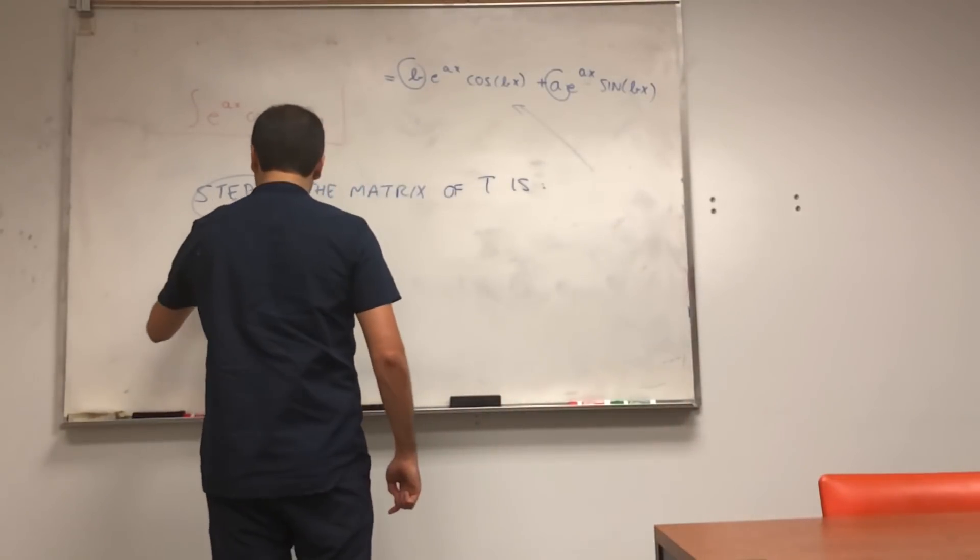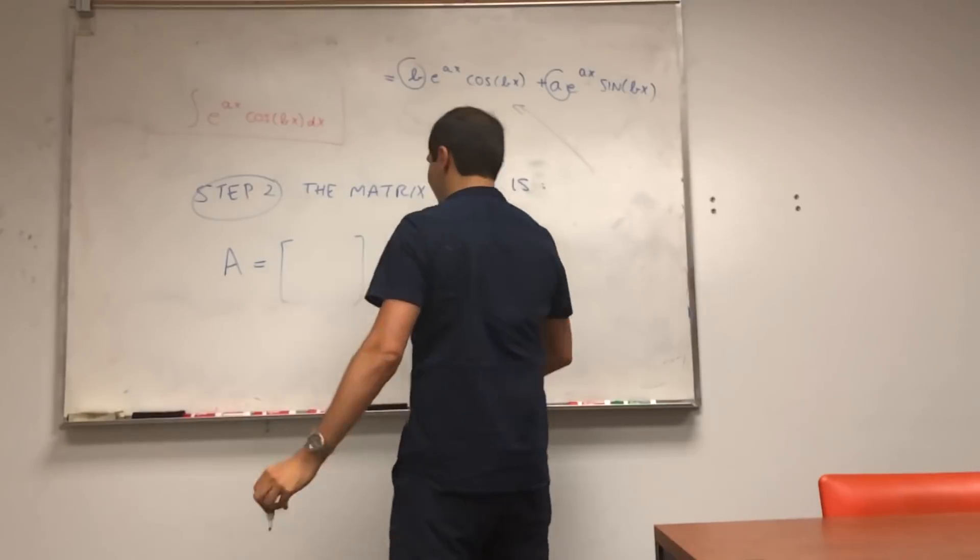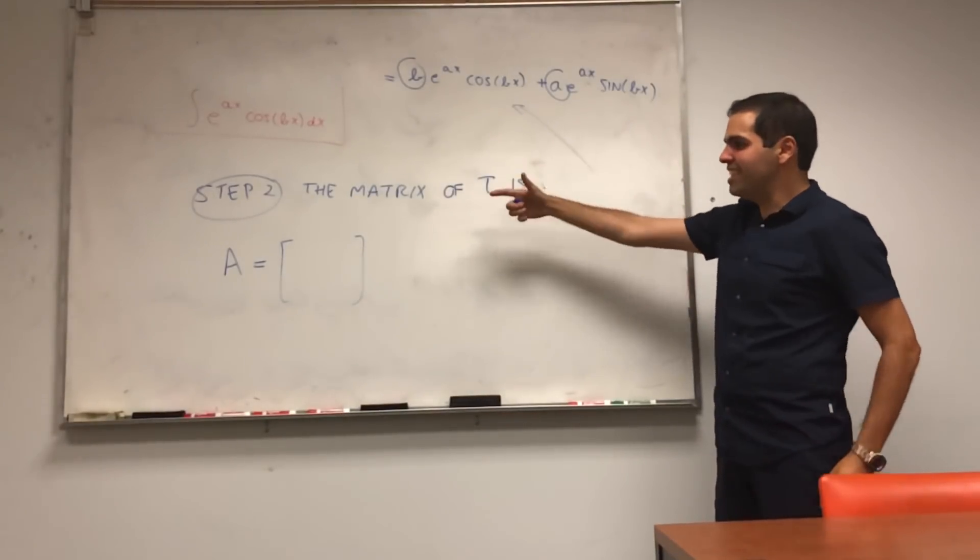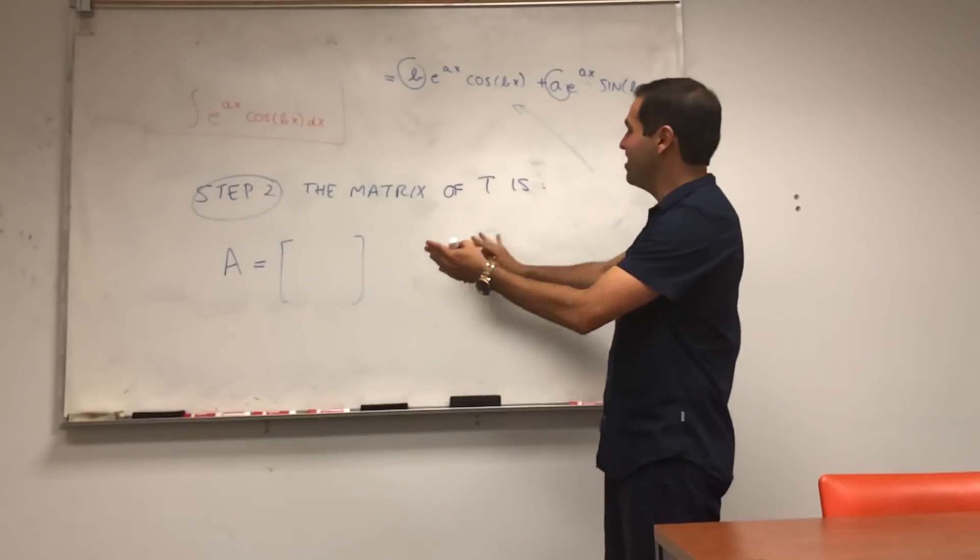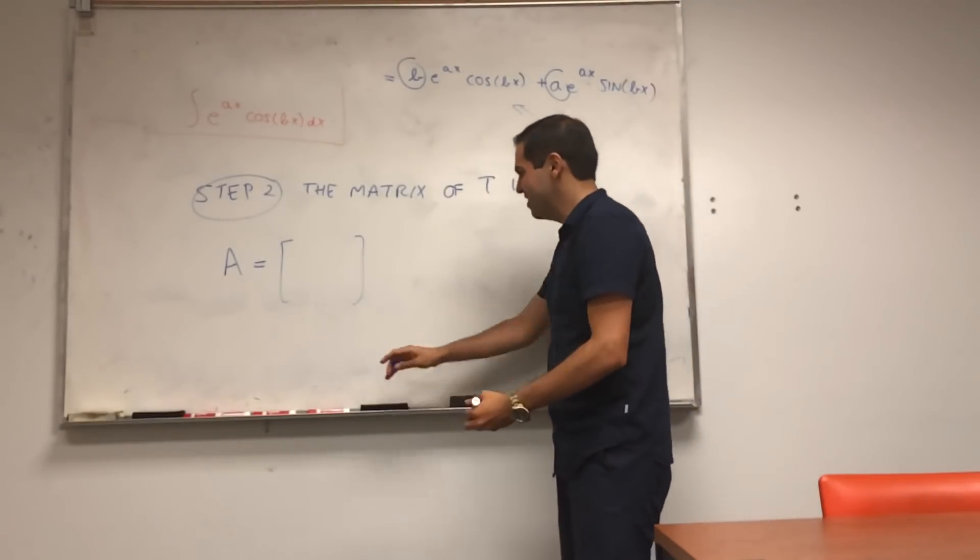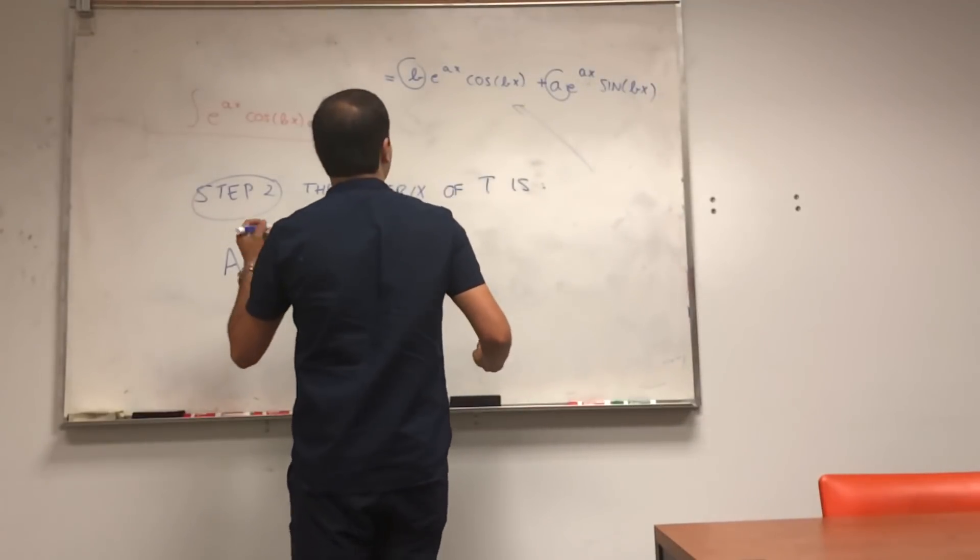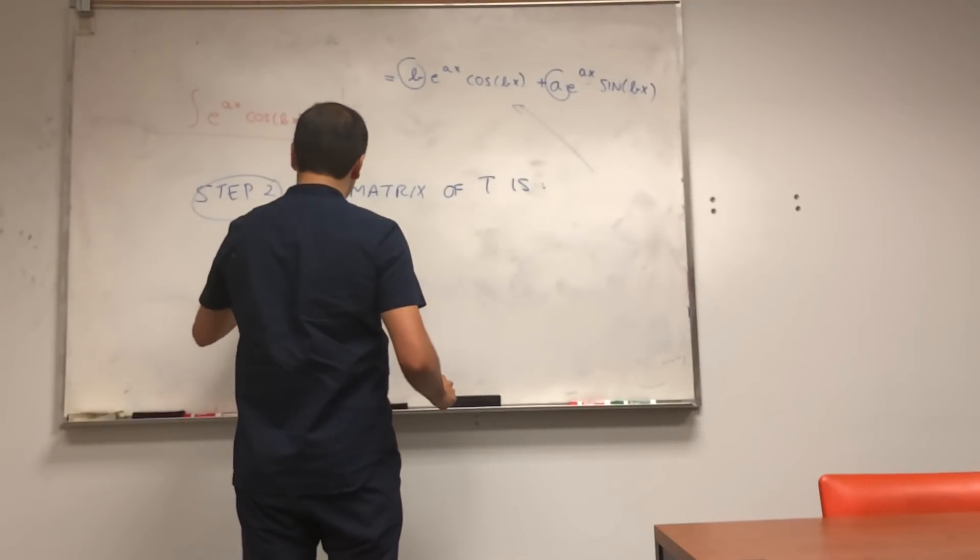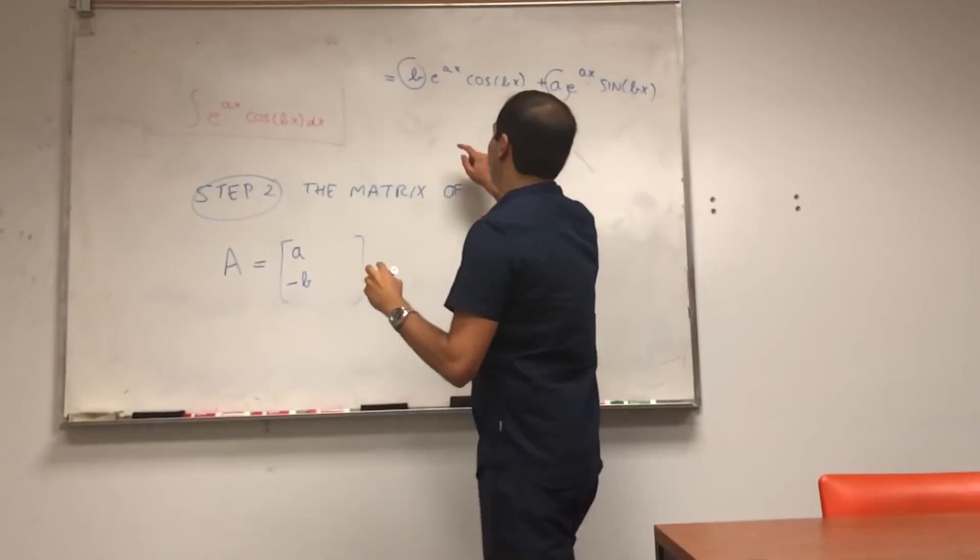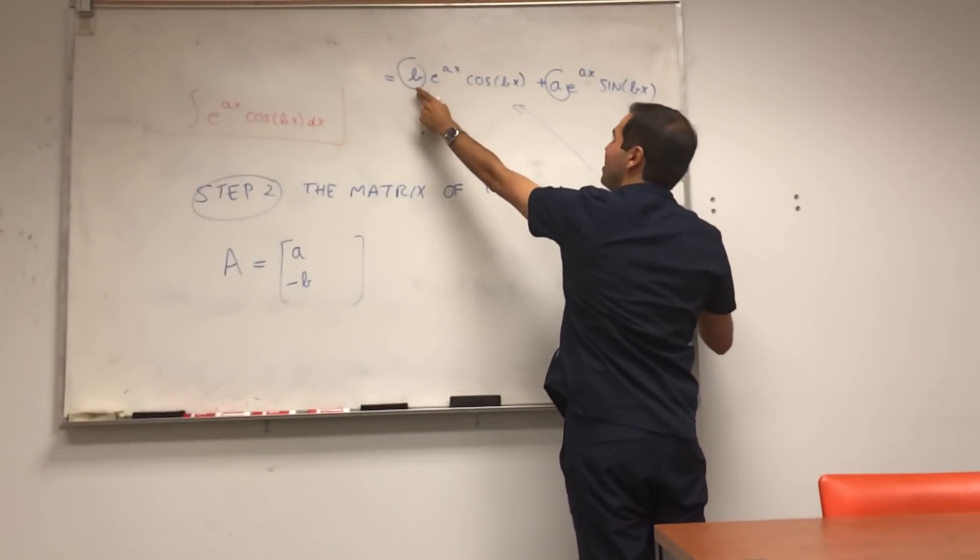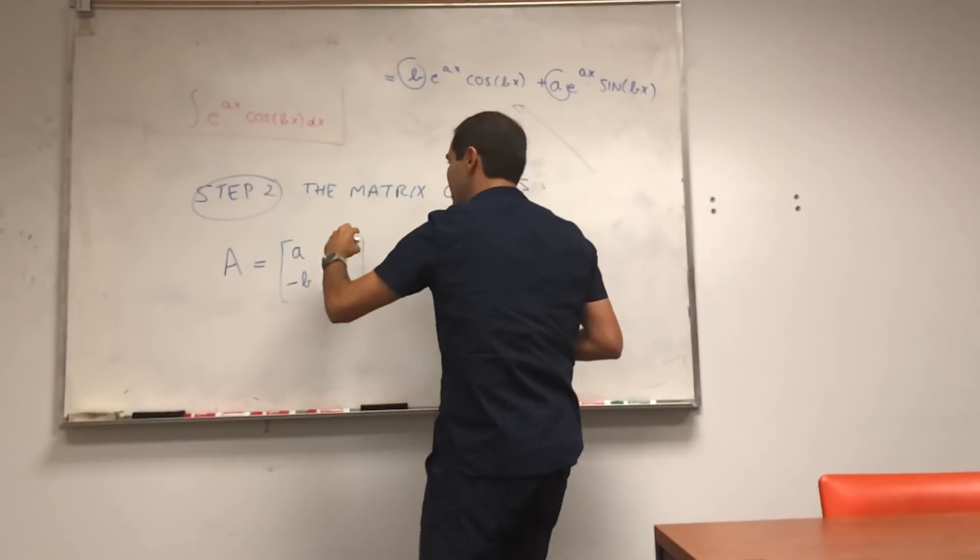Let's call this A. To find the matrix, you just evaluate t at the basis vectors and you gather the coefficients. So here I erased it, but I believe it was a, minus b, and here remember it was t applied to the second vector, so the coefficient is just b and a.